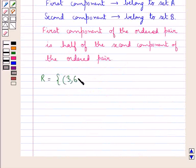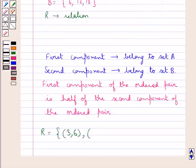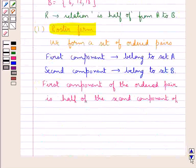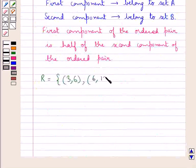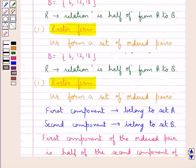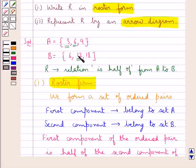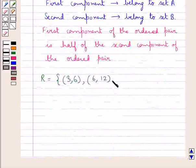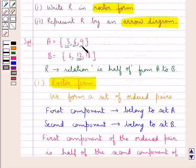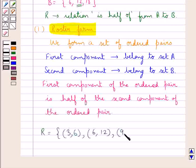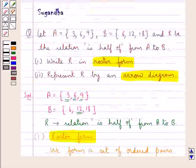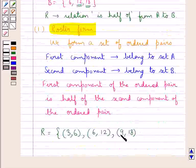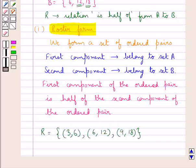The second component of this ordered pair is 6. For the next ordered pair, we take the first component as 6. Since 2 times 6 is 12, and 12 belongs to set B, we get the pair (6, 12) — that is, 6 is half of 12. For the next pair, the first component is 9. Since 2 times 9 is 18, which belongs to set B, we have 9 is half of 18. So we get this set of ordered pairs which is the relation R.